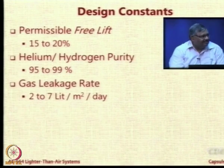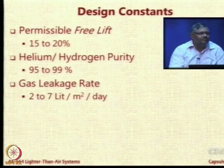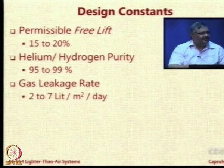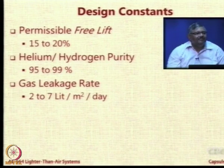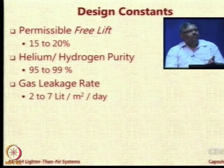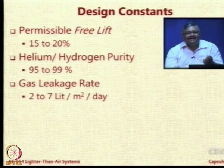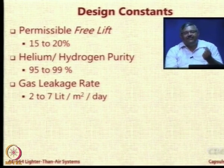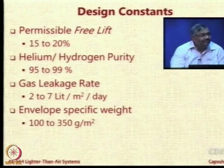Gas leakage rate through the envelope varies depending on the envelope material and its permeability. Typical values are between 2 and 7 liters per square meter per day. You measure the total area and per day per square meter the gas leakage will be between 2 and 7. One envelope that we tested was 3.75 liters per square meter per day — that is the permeability of the yellow fabric we have.